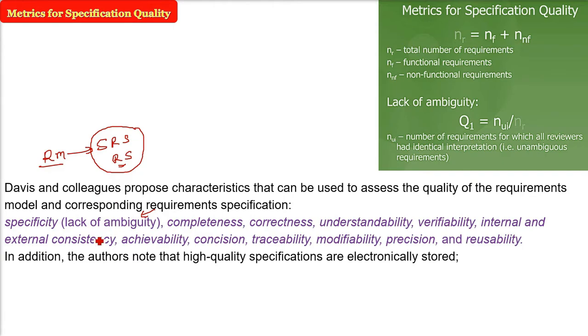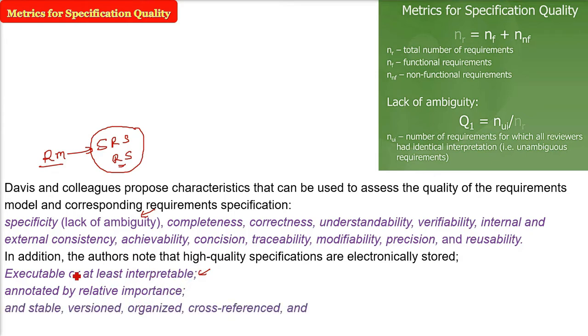Along with this, Mr. Davis and others also said that these high quality specifications are electronically stored. Whether they are able to execute, or if you are not able to execute because the specification requirement model may not be executable, they are at least interpretable only. And the annotation should be given wherever it is admissible. And the document or the SRS should be or the model should be stable, versioned, organized, cross-referenced. These are very important and specified at the right level of detail, this documentation or the product specification.